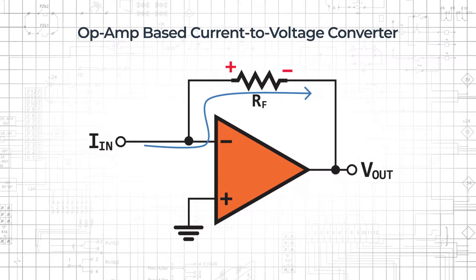To simplify the analysis, we assume that the two input terminals are at the same voltage through a virtual short, and that no current flows into the op-amp's inputs.